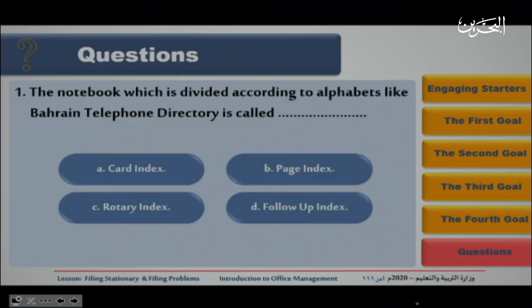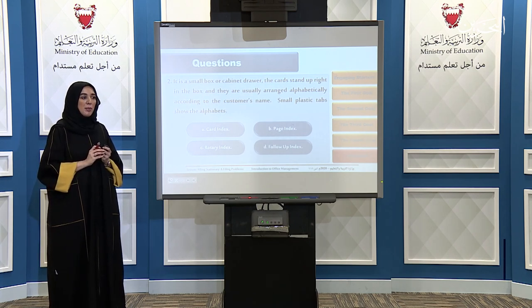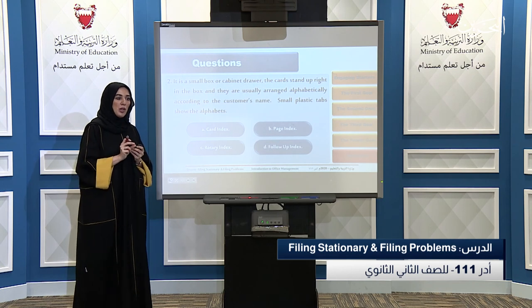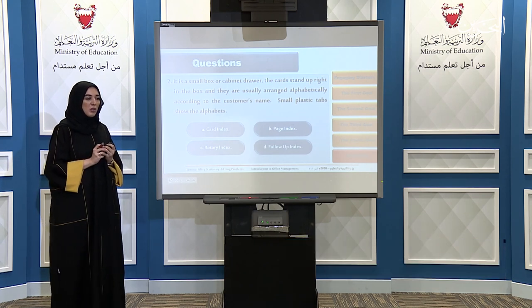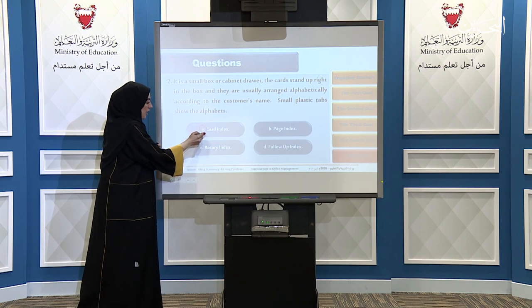Question one: the notebook divided according to alphabets like a telephone directory is called: A. Card Index, B. Page Index, C. Rotary Index, or D. Follow-up Index. The answer is B, Page Index. Question two: it is a small box where cards stand upright and are arranged alphabetically according to the customer's name, with small plastic tabs showing the alphabets. A. Card Index, B. Page Index, C. Rotary Index, or D. Follow-up Index. The answer is A, Card Index.